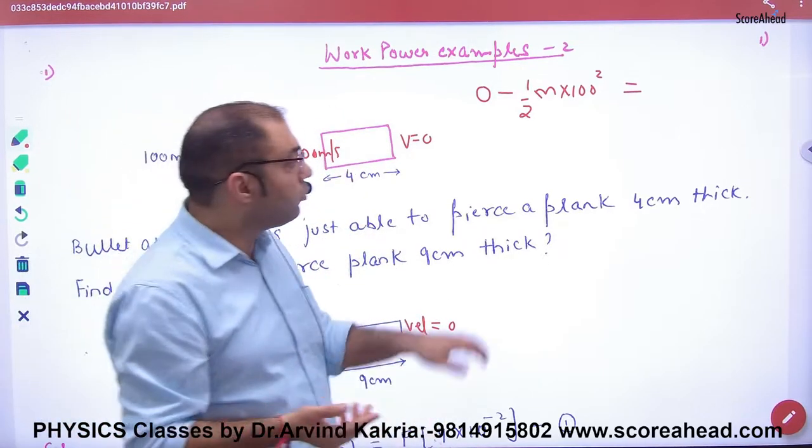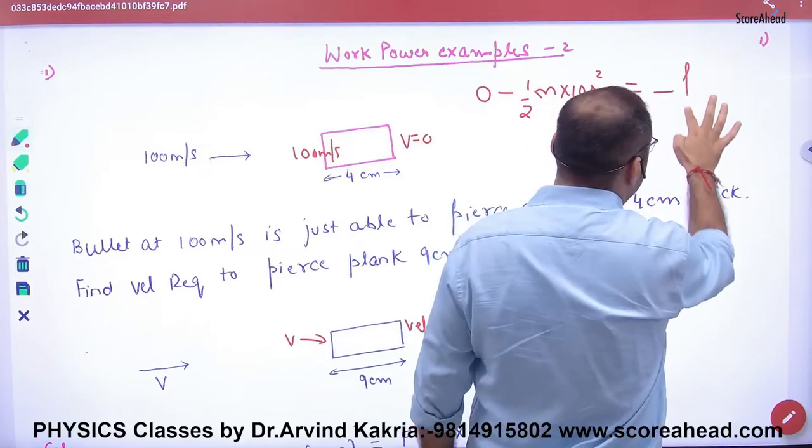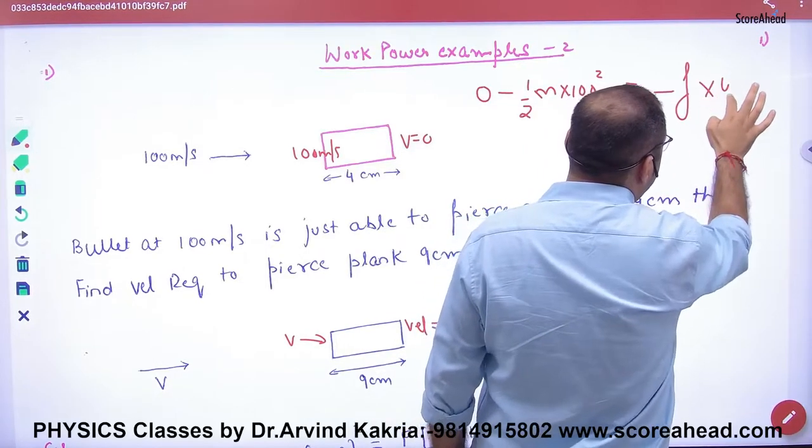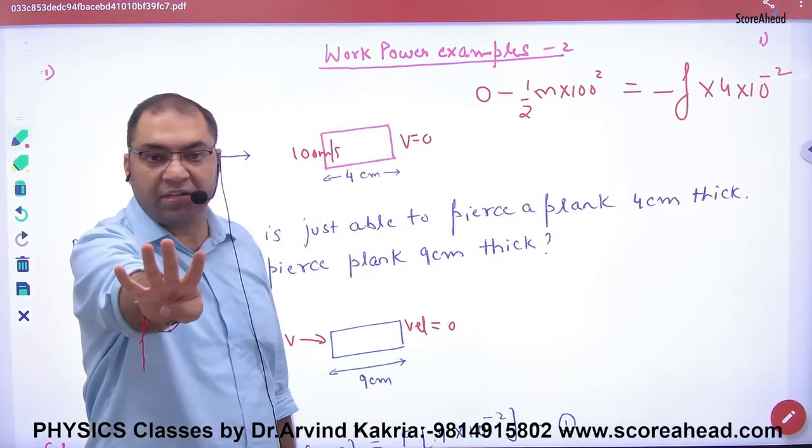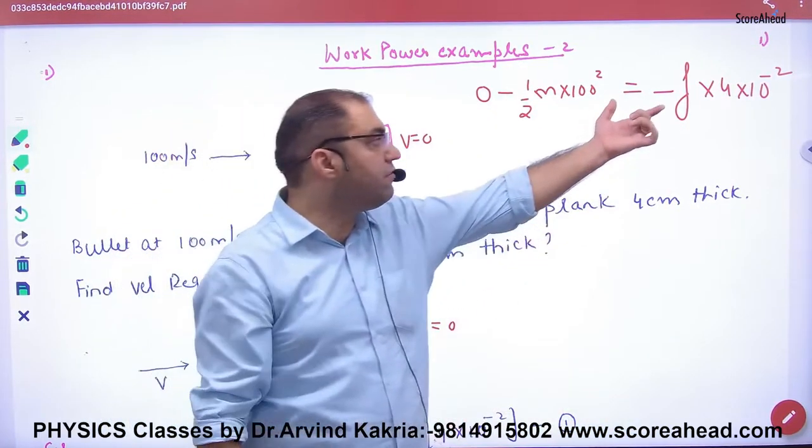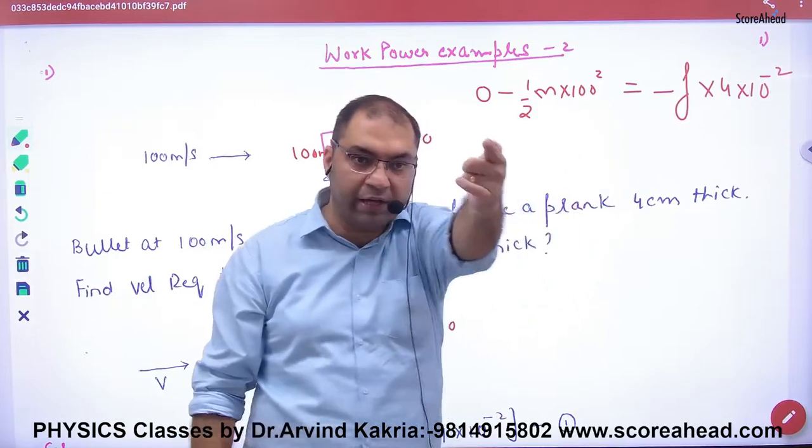Friction is working, so this kinetic energy change is work done by friction. So friction has worked at 4 centimeters. So this is work done by friction which is negative. What is this point, clear here?